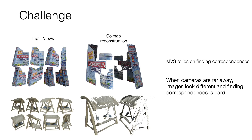For example, with these two object instances, Colmap, a state-of-the-art photogrammetry approach, fails to reconstruct the parts of these objects which are untextured or visible from very few input views. The sparse point clouds in these parts are not adequate to represent the shape.